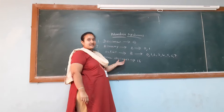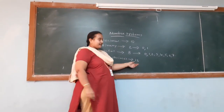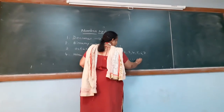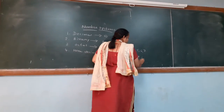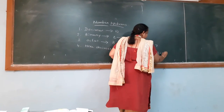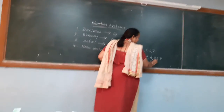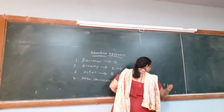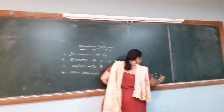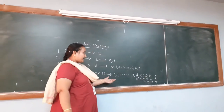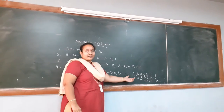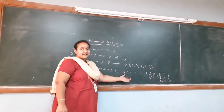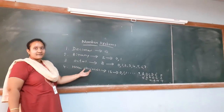Next we have the hexadecimal number system. Its base is 16, so we have 16 digits: 0, 1, 2 and so on up to 9. From 10 onwards, we use alphabets: A represents 10, B represents 11, C represents 12, D represents 13, E represents 14, and F represents 15. So from 0 to 15, up to 9 we have numbers, and afterwards we have alphabets from A to F. By using these 16 digits, we can represent any number in hexadecimal format.